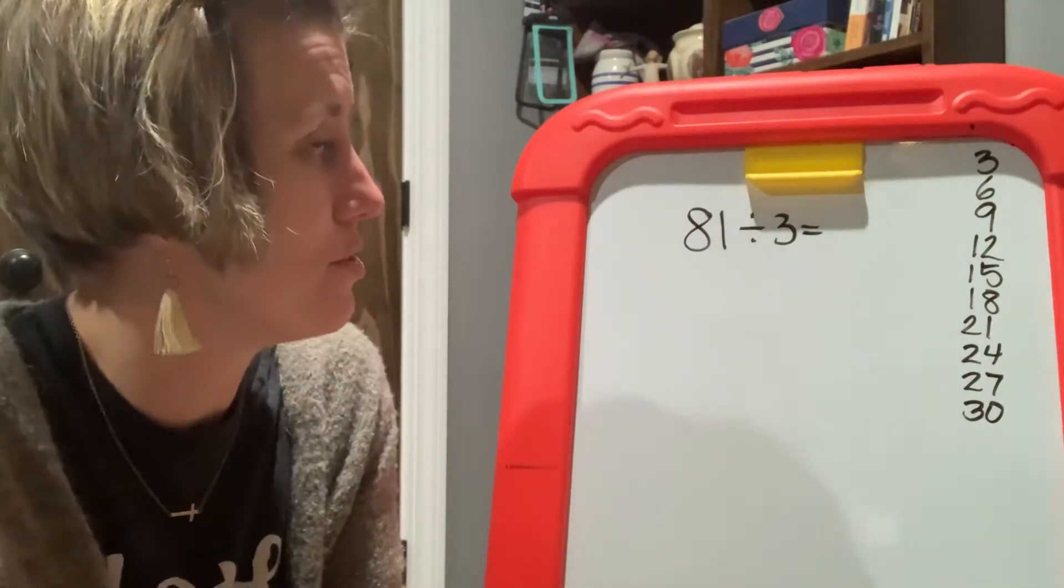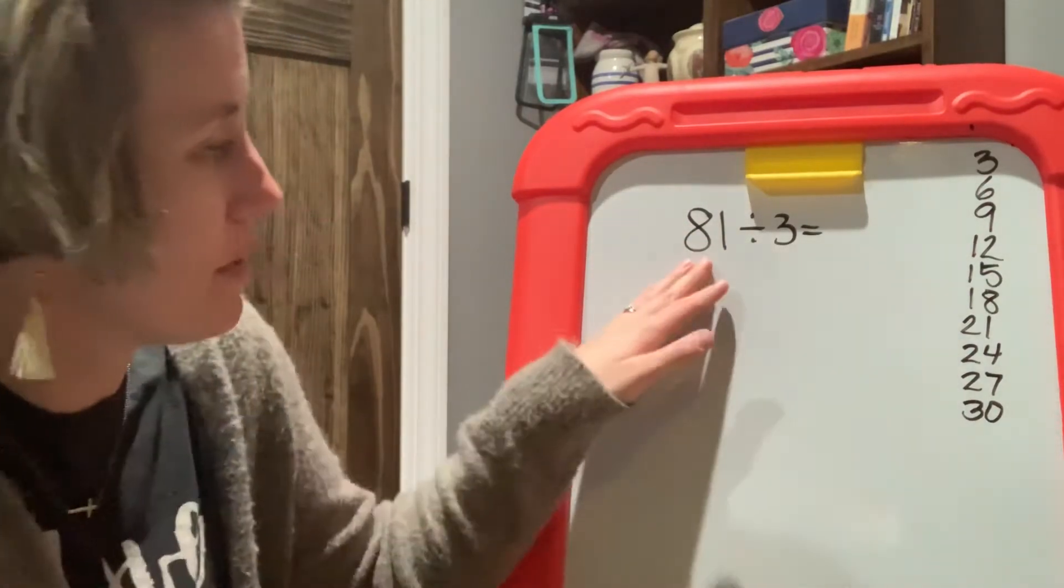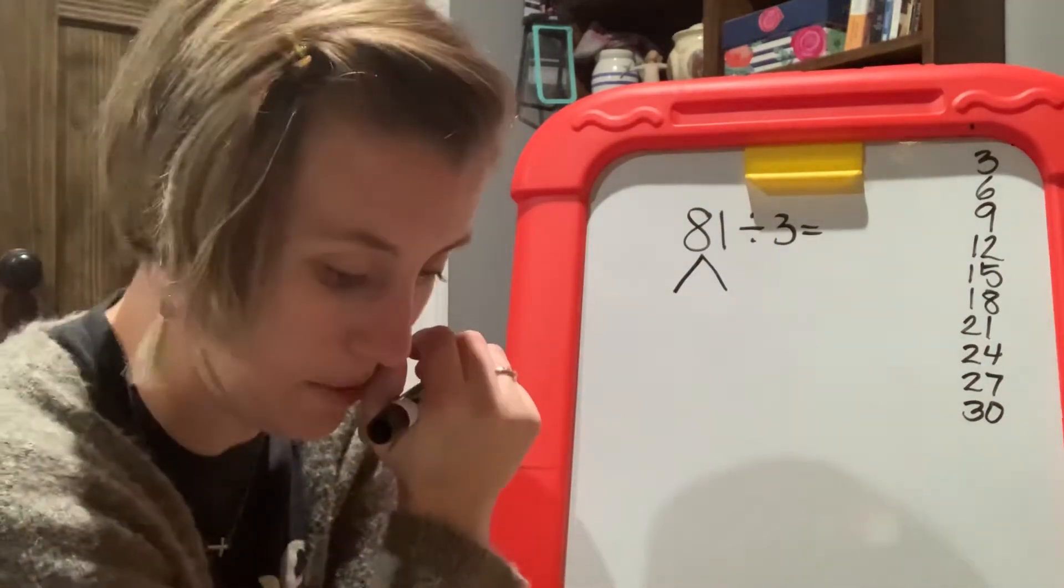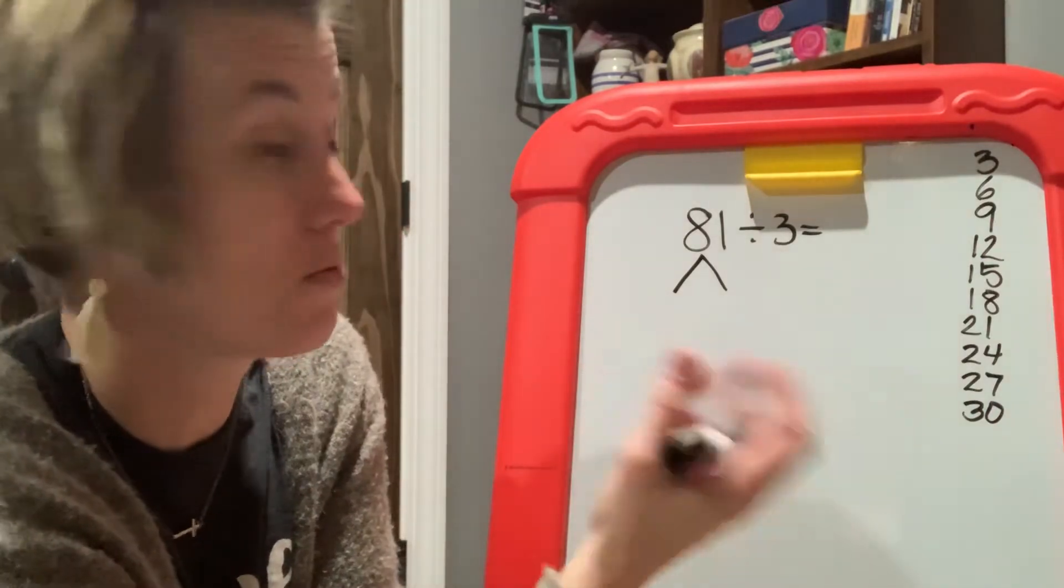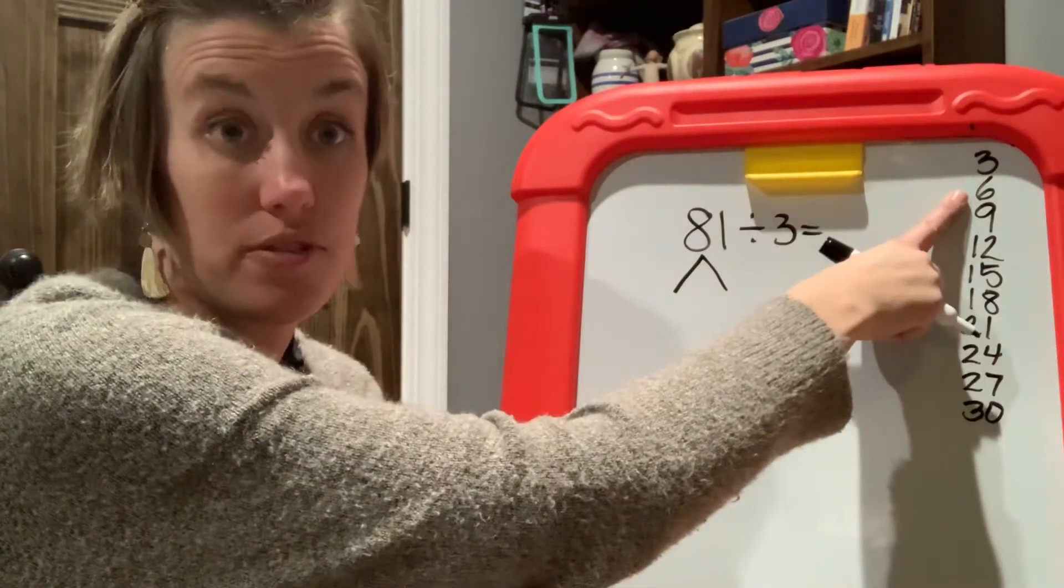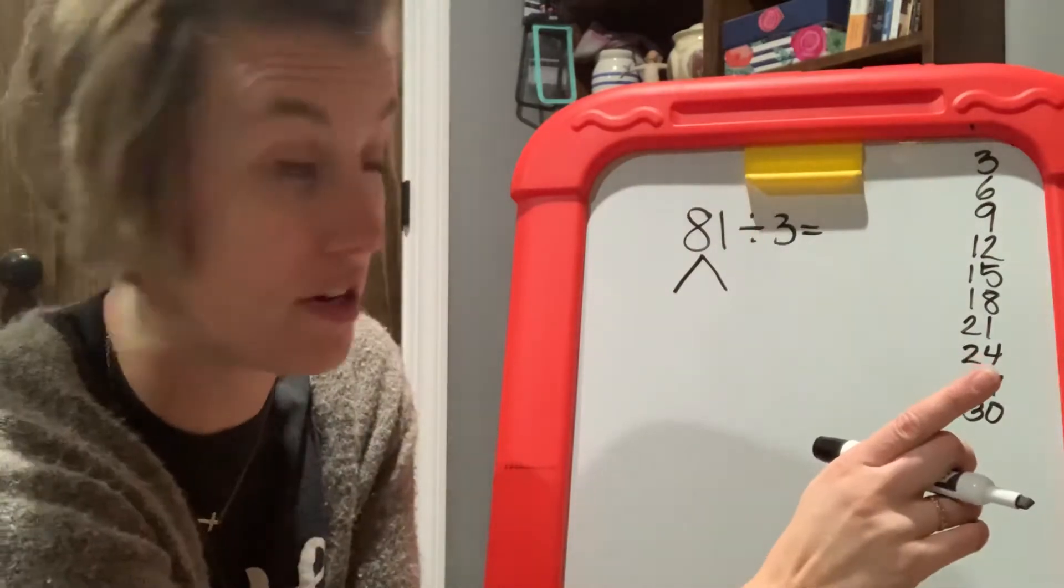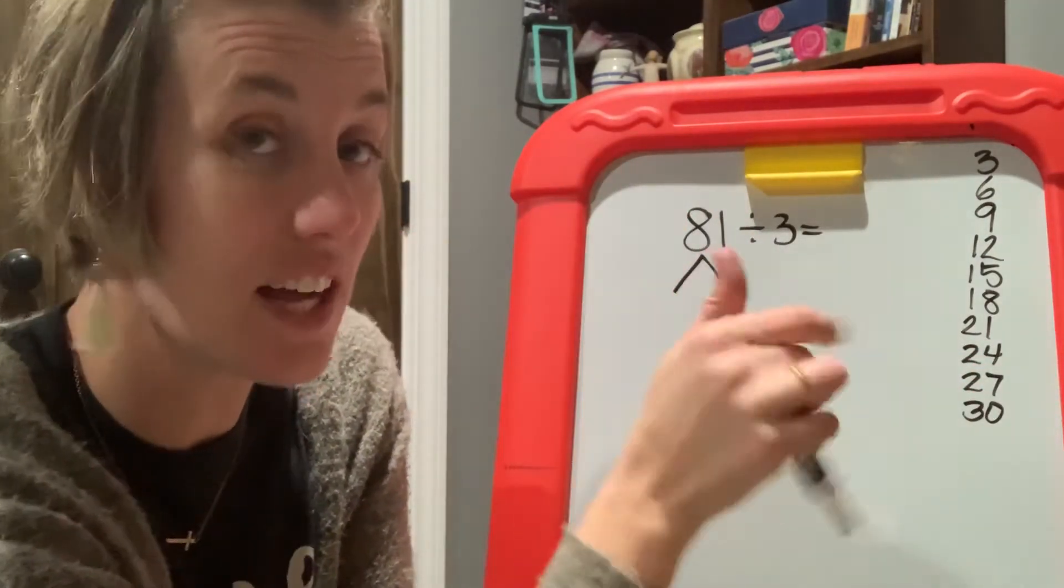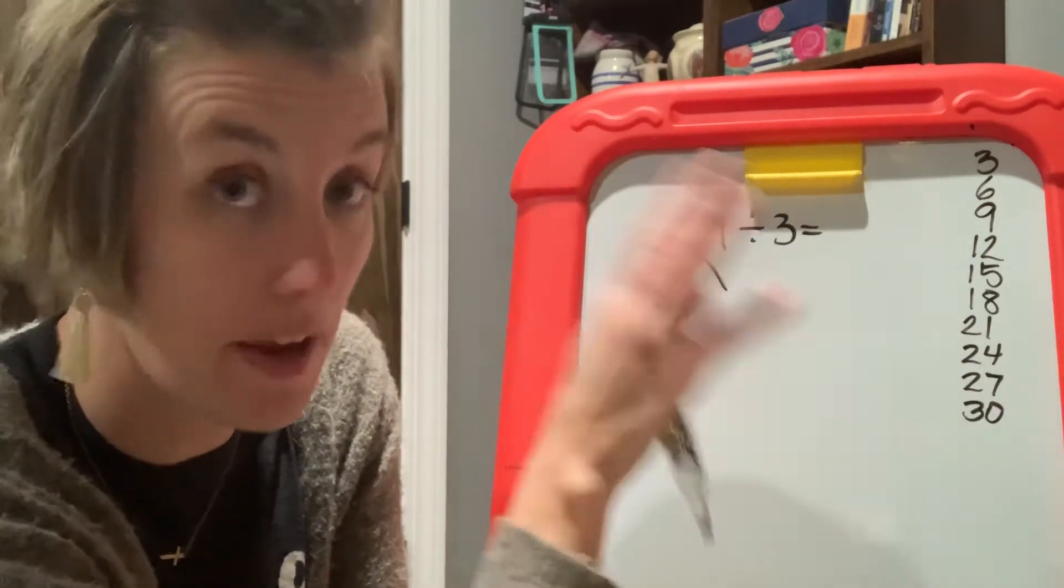But what we need to do is we need to think about what numbers go into three. How can we change this number? So we're going to change this number. I know that six is a multiple of three because I have my multiples listed out because I'm cool like that. I know that six is a multiple three. Another thing I know for multiplication is that I can kind of hide a zero and then replace the zero when I'm done to make life a lot easier too.